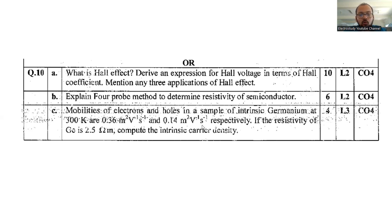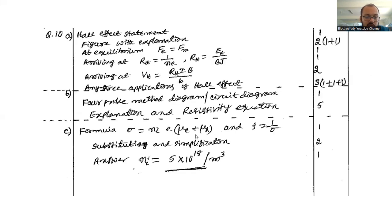The mobility of electrons and holes of a sample of intrinsic germanium at 300 Kelvin are 0.36 meter square per volt second and 0.4 meter square per volt second respectively. If the resistivity of germanium is 2.5 ohm meter, compute the intrinsic carrier density. Most important question. First of all, write the given data. This is the formula. Note on the formula.